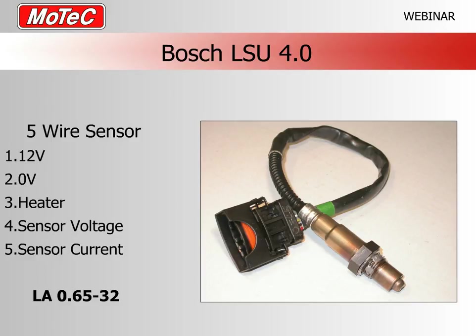There are four types of sensors we support in the MoTeC ECU — specifically the M400, M600, and M800 series. They're all what we call five-wire sensors. Some actually have six pins; the sixth pin has a resistor and is used for auto-calibration in devices like our LTCs, lambda-to-CAN devices, and professional lambda meters. Our ECUs do not do automatic calibration, so they use only five of the wires.